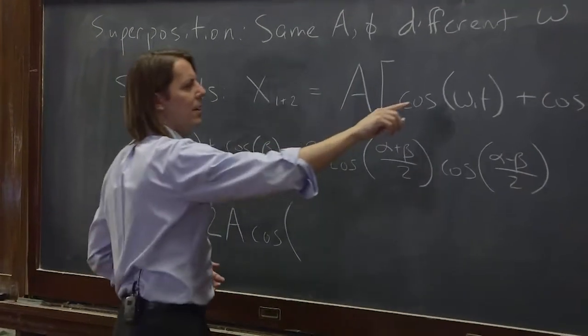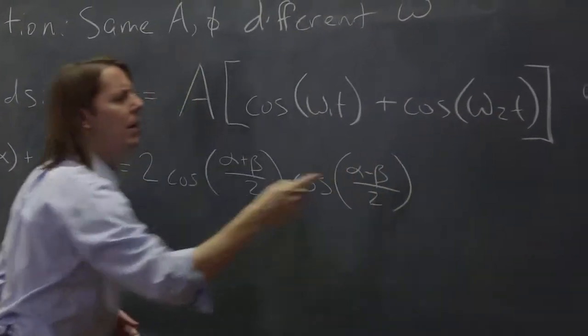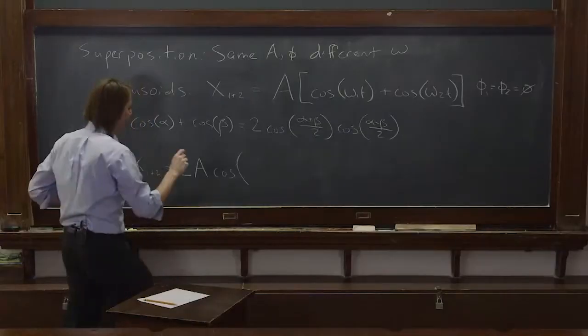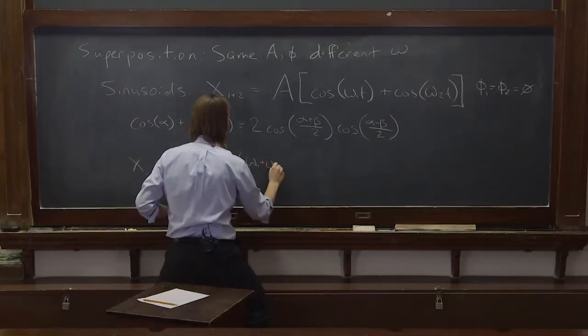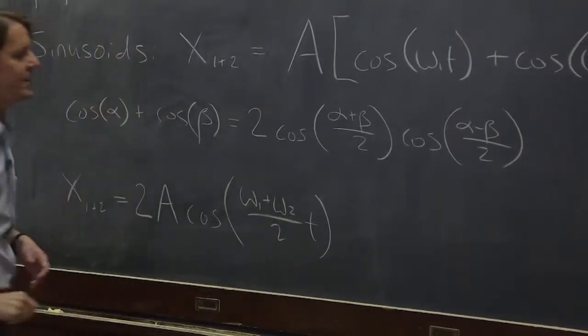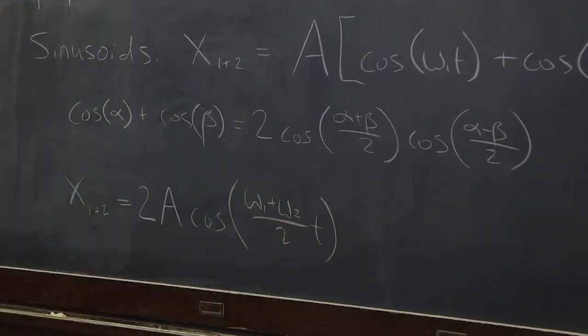And now, this plus this over 2, omega 1t plus omega 2t over 2. So if we were going to write that as a single frequency, it would be omega 1 plus omega 2 over 2 times t. I just pulled them out and left the t. They're both distributing onto the t there.